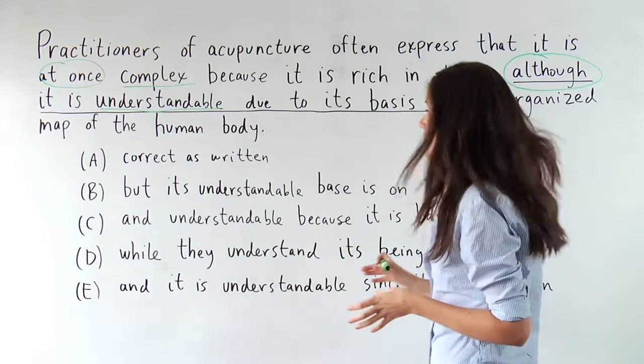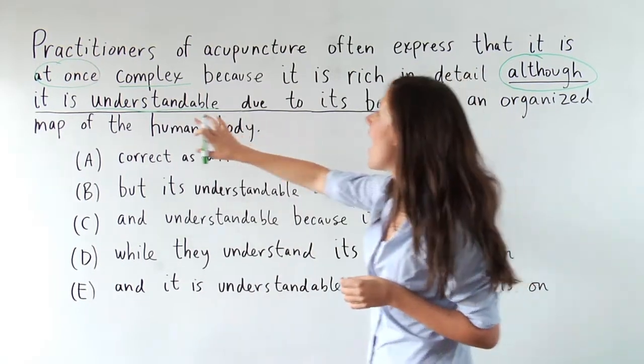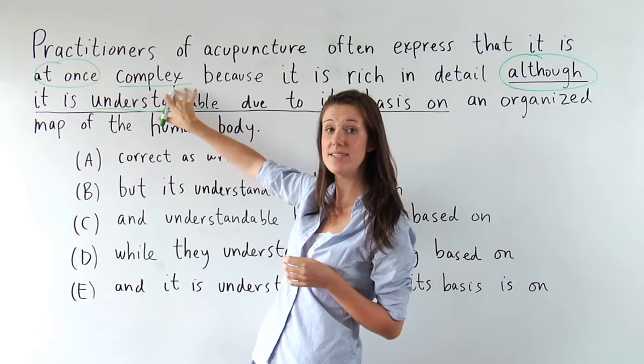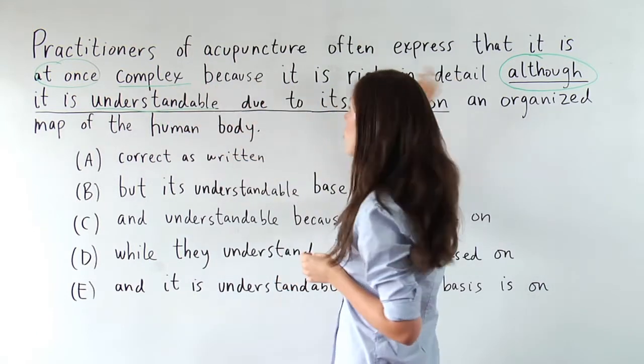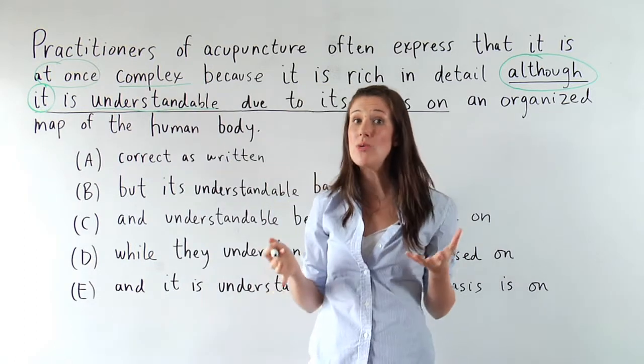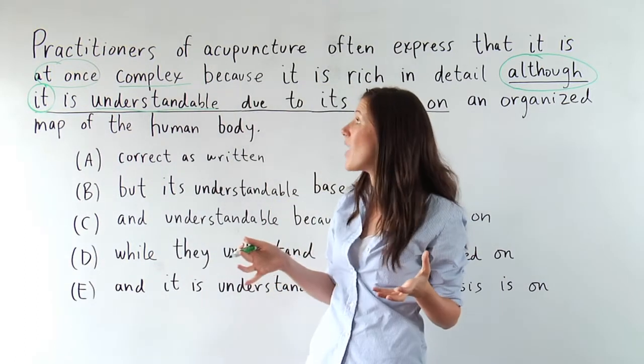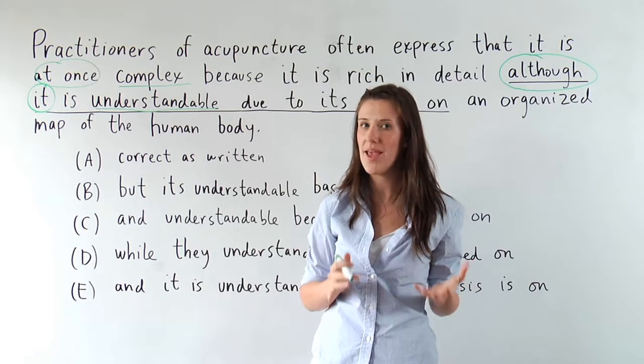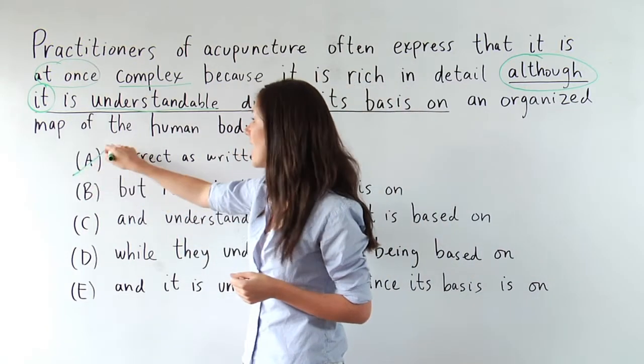So let's look at our answer choices here. Well, I've got at once, complex, in the original sentence, although it is understandable. Uh-oh, not the same part of speech. Now I'm connecting an adjective, complex, to a pronoun it. So A, you're out of there.